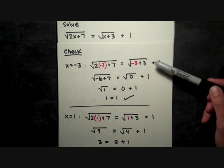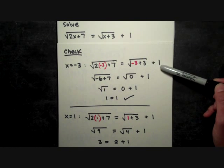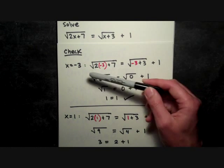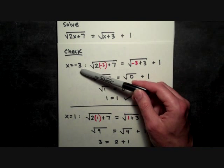It's easy to see that the left side becomes 1 and the right side also becomes 1. So x = -3 makes a true equation. So we have a solution.